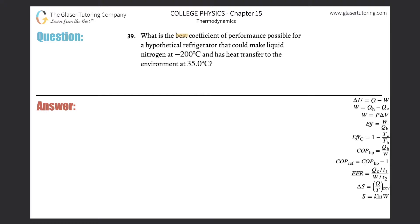Number 39: What is the best coefficient of performance possible for a hypothetical refrigerator that could make liquid nitrogen at negative 200 degrees Celsius and has heat transferred to the environment at 35 degrees Celsius? So basically the coefficient of performance.